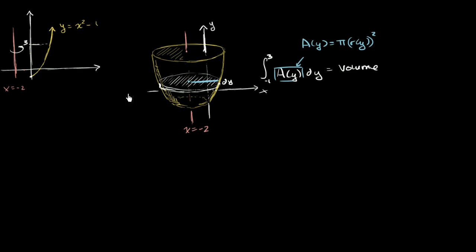So let's think about that. What is this curve? Let's write it as a function of y. If you add 1 to both sides and swap sides, you get x squared equals y plus 1.